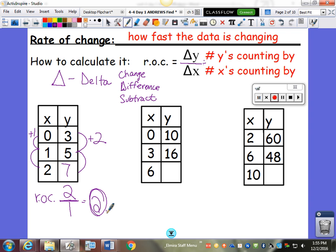In our middle one, our Y values are counting by 6's, so this would be 22. This side is counting by 3's. So my rate of change would be the change in Y on top and the change in X on the bottom. 6 divided by 3 is 2.